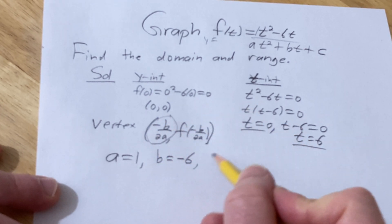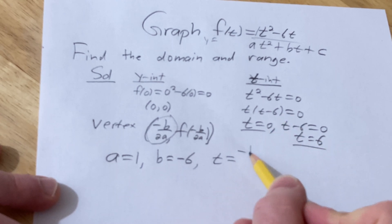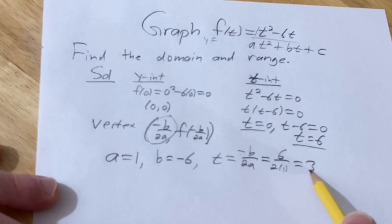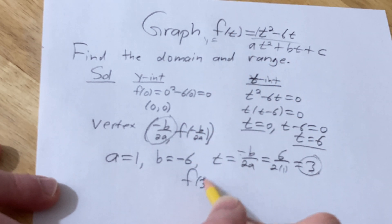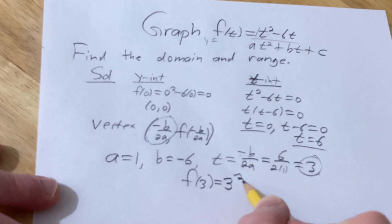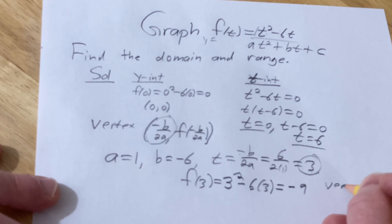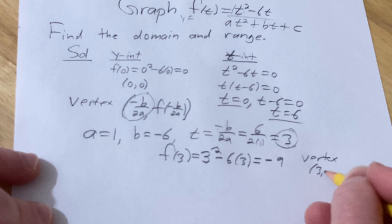So this, which is t, is going to be the following. It's going to be negative negative 6, so 6 over 2 times 1, so 3. This is actually called the axis of symmetry. Now we take this and plug it back into the function to find the y-coordinate of the vertex. So plugging it back in here will give us 3 squared minus 6 times 3. It's 9 minus 18, that's negative 9. So our vertex is going to be 3, negative 9.